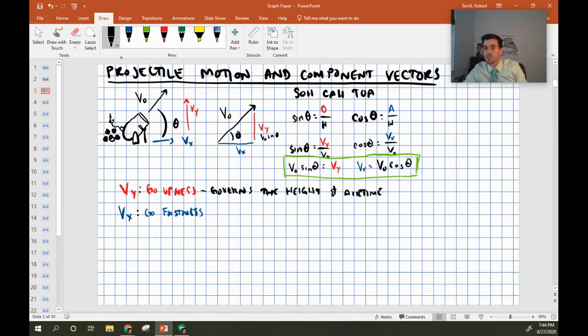Go upness is called that because it governs the height and airtime. So as we shift this angle upwards and more and more of our V naught turns into V_Y or turns into go upness, we will spend more and more time in the air.